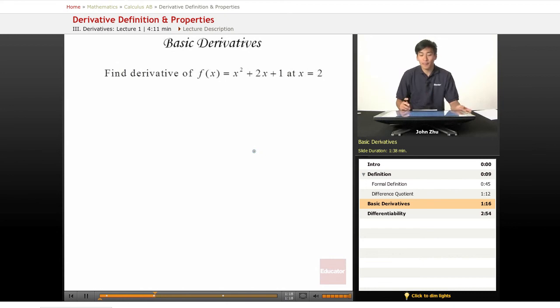So let's find the derivative of a function: f of x equals x squared plus 2x plus 1 at x equals 2.